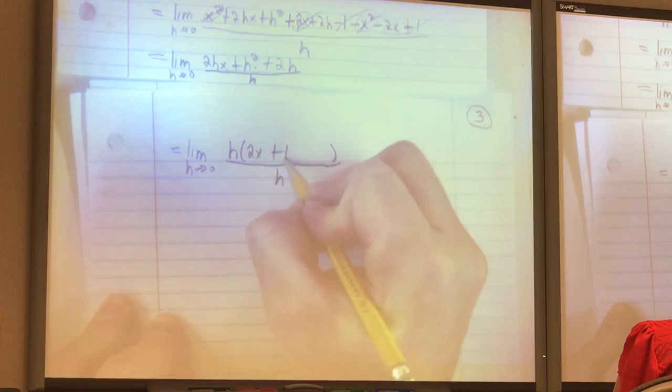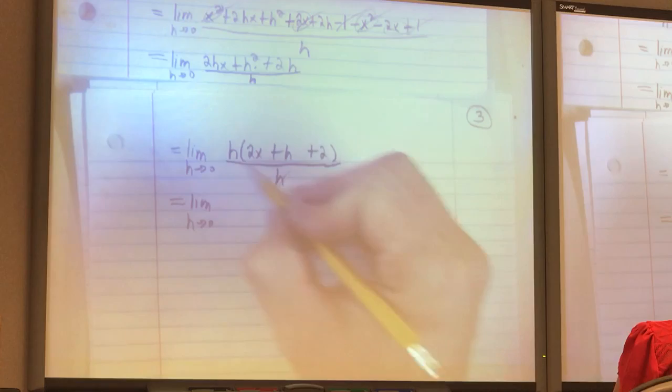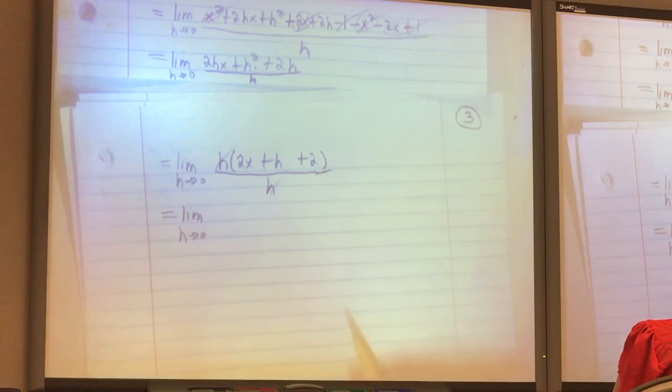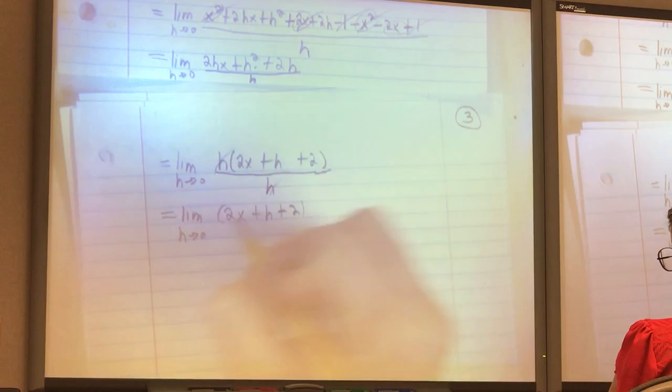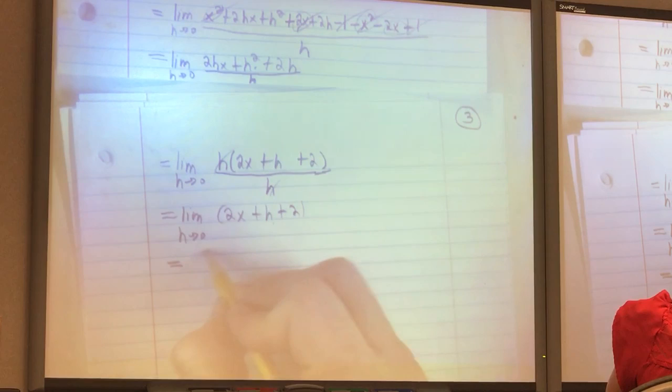What would be the next thing to do? Cancel the edges. Cancel the edges. The whole purpose of this was to not have zero over zero anymore. And we were able to do this using algebra. So, we're taking the limit then of a polynomial in h. This function is continuous for all real numbers, especially when h is approaching zero. So, we can just plug in h equals zero. Now, I am using the limit so I don't have to write limit anymore. And I get 2x plus 2.